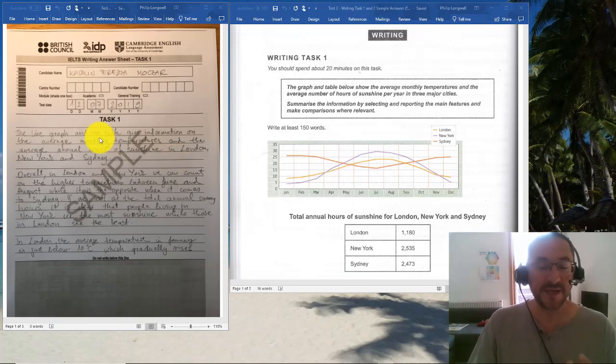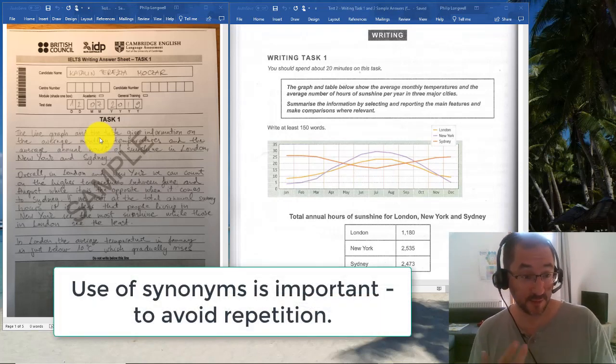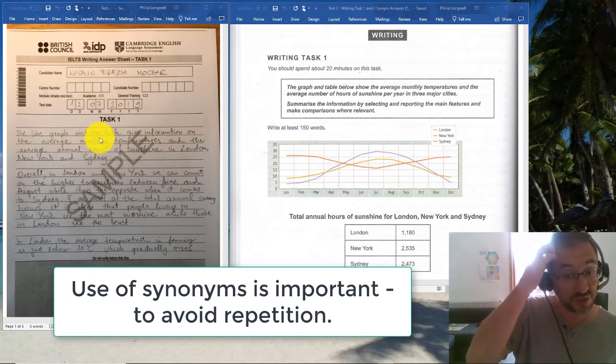Once we move past the introduction, we need to use synonyms for talking about the information. We're not going to keep using the word cities or sunshine or temperature every time; we're going to mix up our language.